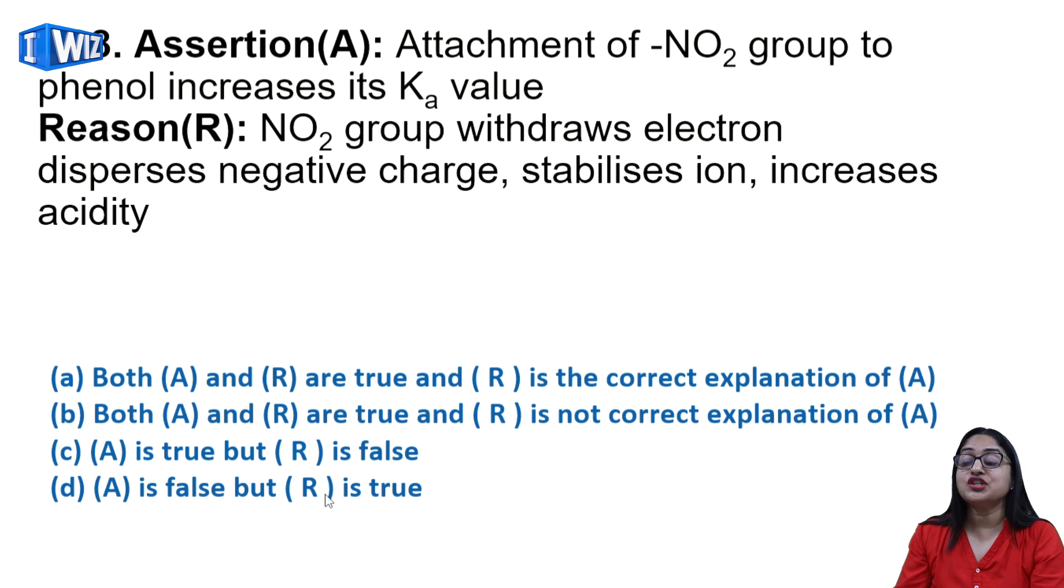98th question: attachment of NO2 group to phenol increases its Ka value. NO2 group is electron withdrawing in nature, its attachment increases acidic strength because it stabilizes the anion and increases acidic character. So yes, both assertion and reason are true and reason is correct explanation of assertion.